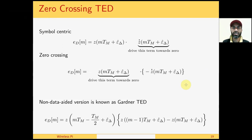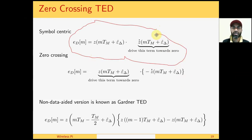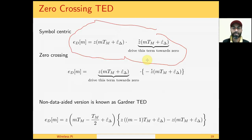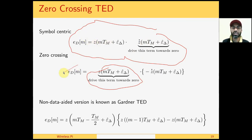Before we discuss the zero crossing timing error detector, a quick review of what we have achieved so far. The approach discussed in derivative TED and early-late TED is called the symbol centering approach, because we take the derivative of the energy Z squared, which comes out to be 2Z into Z-dot. We are finding the peak of the pulse by driving its derivative towards zero — when the derivative is zero we have reached the maximum. Another approach is to drive the Z-dot term towards zero directly, since if either term goes to zero, the error signal approaches zero and the timing loop has locked.